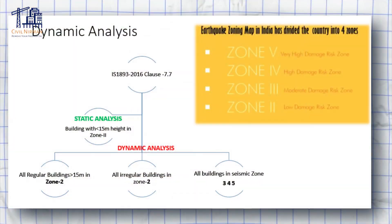You can check all the irregularities in the structure and also provide torsional eccentricity for the building. The next important portion is the computer aided design. For the dynamic part — whether you need to go for dynamic or static analysis — you can check out this segment where I have briefed for which particular building you have to perform static analysis and where you have to go for the dynamic analysis.